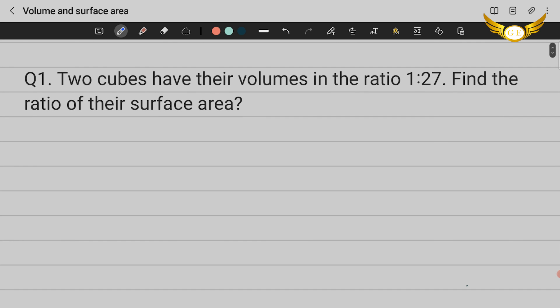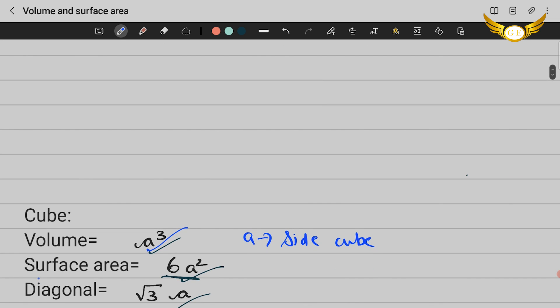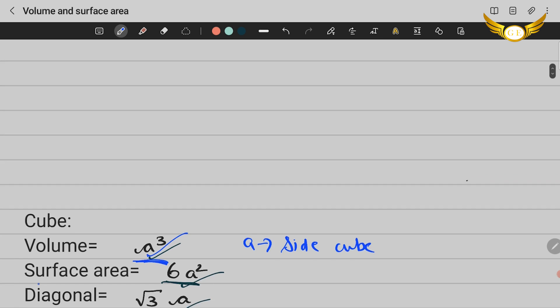Now our question has two cubes with their volumes as 1 to 27. As we've already seen, volume is a³. Let's assume the side of one of the cube is a and the other is b. So a³/b³ is given as 1 to 27. It's the volume that is given, so volume is a³/b³.